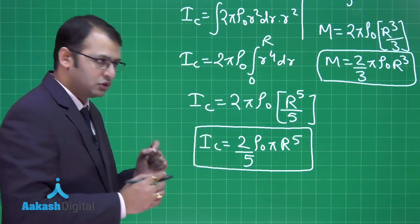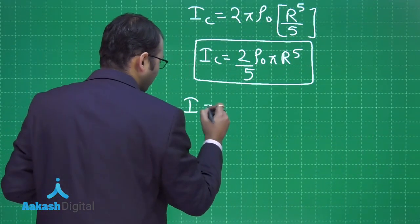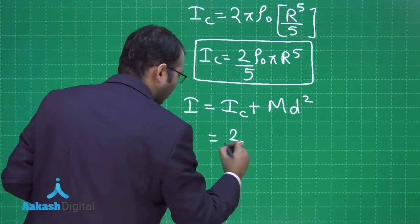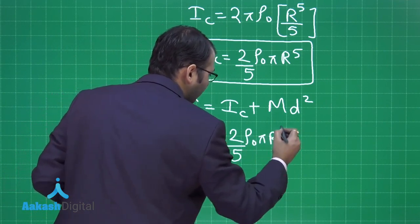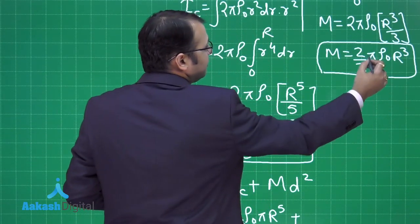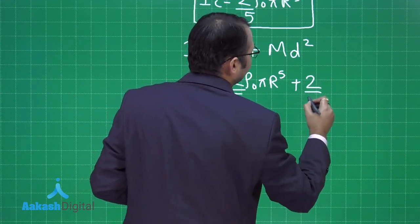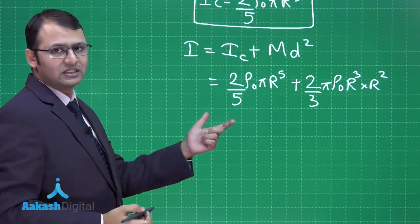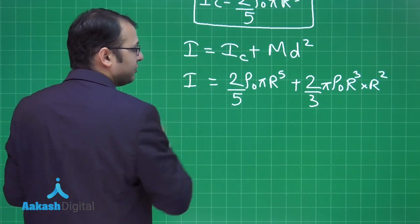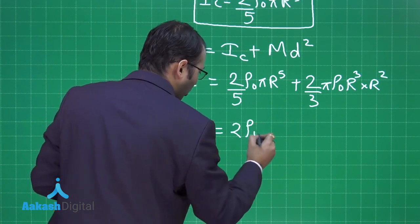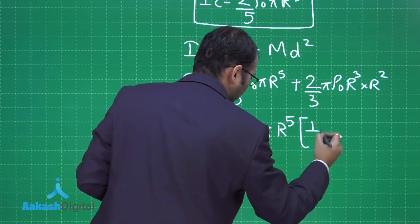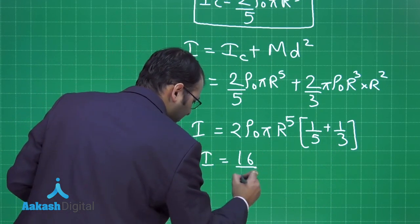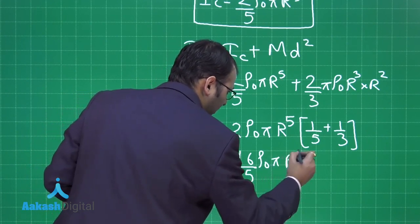Applying the parallel axis theorem: I = Ic + Md², where d = R (distance between the central and edge axes). So I = (2/5)πρ₀R⁵ + (2/3)πρ₀R³·R² = (2/5)πρ₀R⁵ + (2/3)πρ₀R⁵. Taking 2πρ₀R⁵ as common: I = 2πρ₀R⁵·(1/5 + 1/3), and solving 1/5 + 1/3 = 8/15.